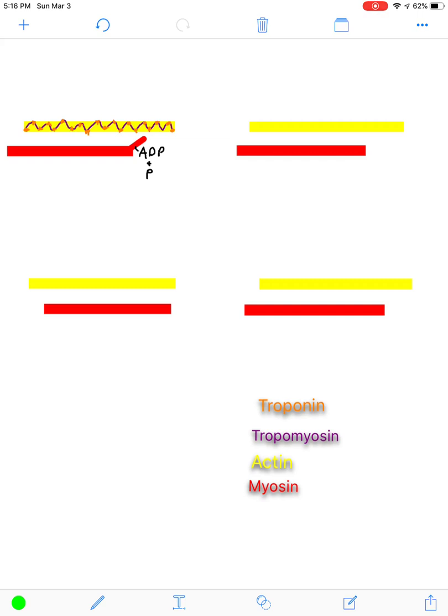You can think of troponin as the staples and tropomyosin as the wire that wraps around actin, preventing contraction. The only thing that can change troponin's shape and activate it is going to be calcium.